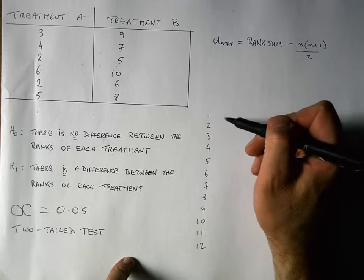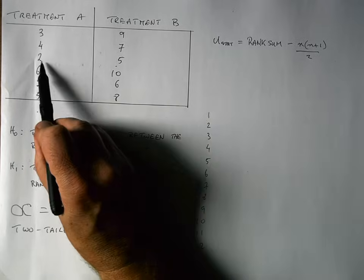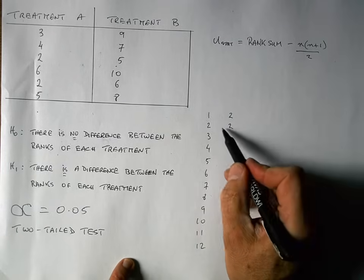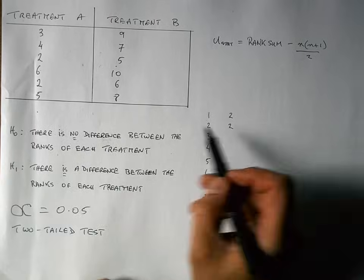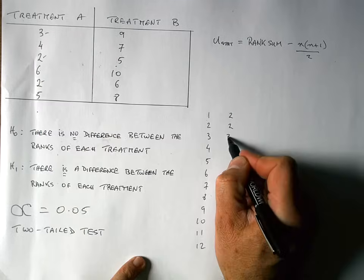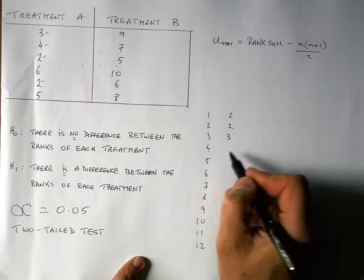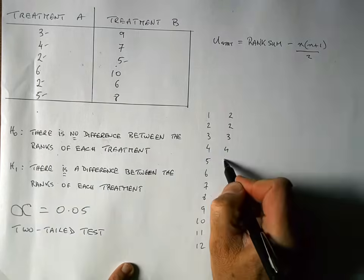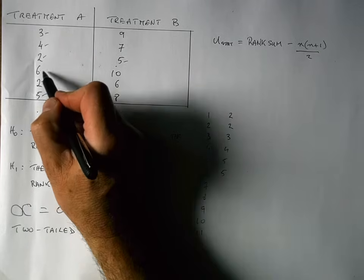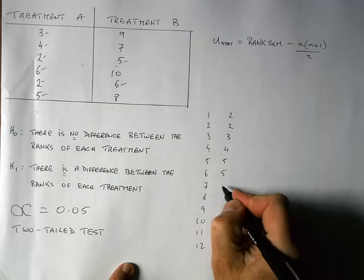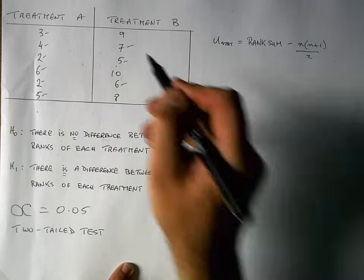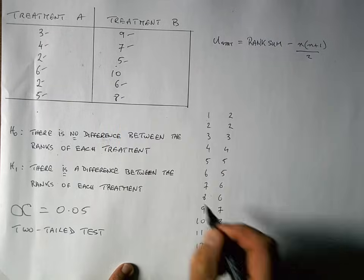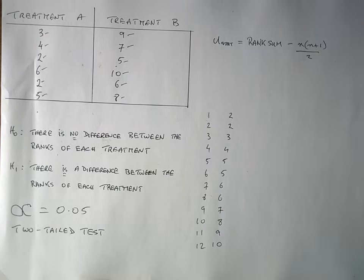I'm going to rank all my values from the smallest to the largest. Looking for the lowest value to rank as number one, I can see I have a two in my data and also another two, so I rank the first two as number one and the second two as number two — that gives us a tie, which we'll come back to. My next highest value is three, then four. When I come to five, I've got a five in treatment A and also a five in treatment B — another tie. My next highest values are a six in treatment A and a six in treatment B — another tie. Then seven, ranked as nine; eight, ranked as ten; nine, ranked as eleven; and finally a value of ten, my highest value, ranked as twelve.